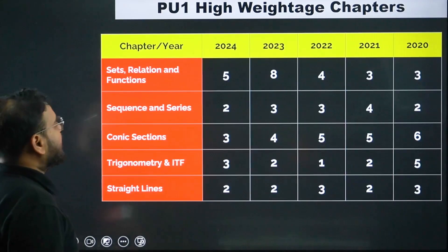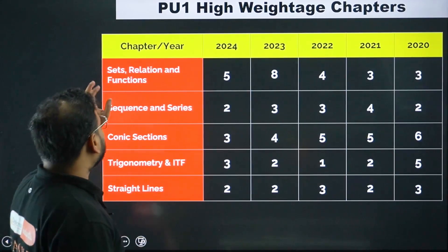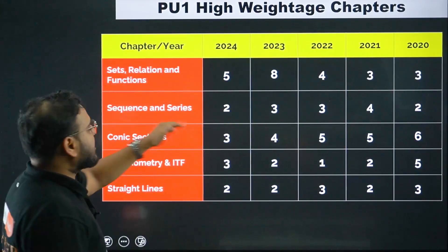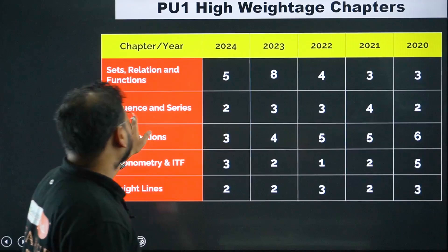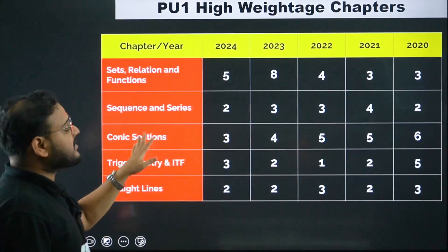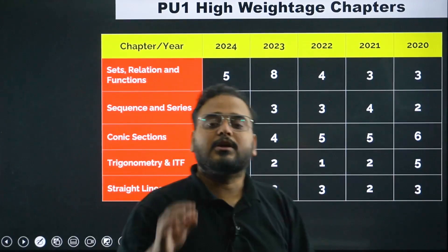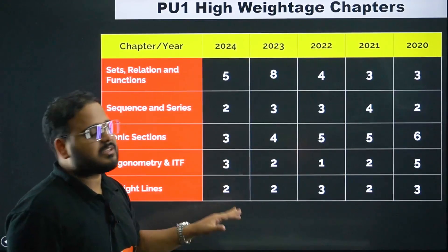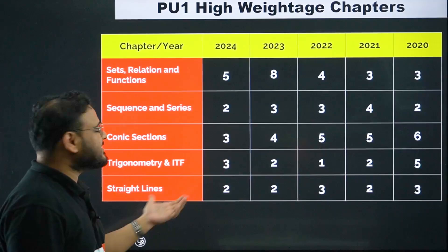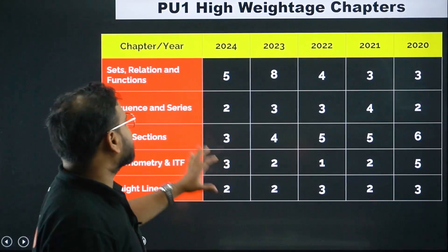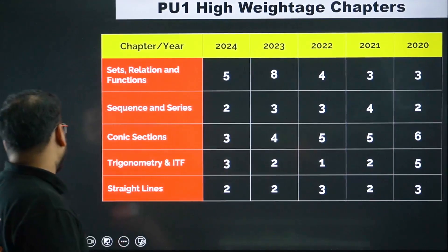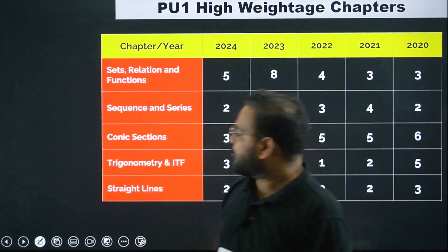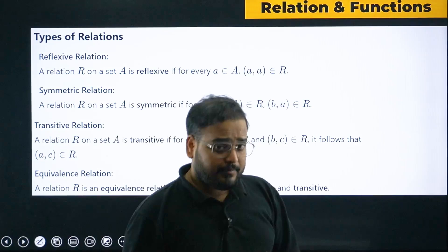On the PU1 side, we have set, relation, and function — very easy, five questions can come this year. Sequence and series: two to three questions. Conic section: three to four questions for sure. Trigonometry: three questions can come. Straight lines: two questions. These are the high-weighted chapters from PU1 side as well. PU2 chapters are here and PU1 chapters are here — very, very important to know this.